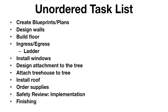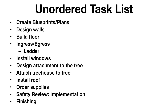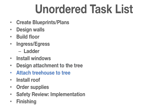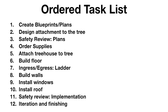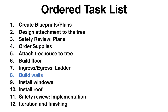Here is a list of tasks for our treehouse in no particular order. We need to design the walls, create the blueprints, and decide how we're going to attach the treehouse to the tree and then do it. Now let's put a basic order or structure to this list. For example, we can't build our treehouse before we order the supplies. We can't create our windows before we've built our walls.